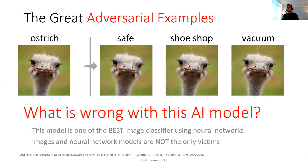But this is not the end of the whole story. We also need to be aware of some downsides amplified by deep learning technology. One highlighted issue is adversarial examples. If we give a model an ostrich image, the model says it's an ostrich with high confidence. But if we look at slightly modified images — modifications so small a human cannot notice — the model produces wrong labels such as safe, shoe shop, and vacuum. That indicates something is wrong with current deep learning models.